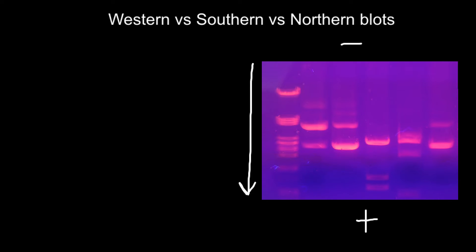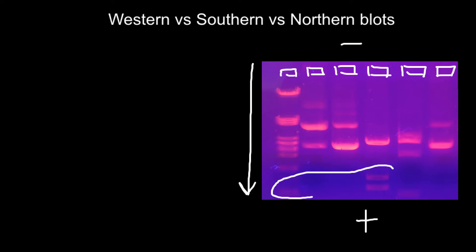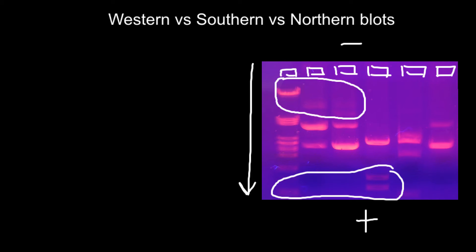Here we would have positive current and here we would have negative current, so the negatively charged DNA would move in the direction of the positive charge. Looking at this picture, we can also tell that the DNA was loaded here in these wells. Those molecules that travel the longest distance are smaller, since the gel is a porous substance that lets molecules pass through it — smaller molecules travel through it faster, while bigger, heavier molecules travel a smaller distance.